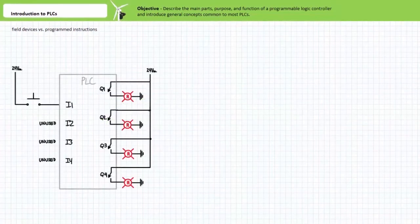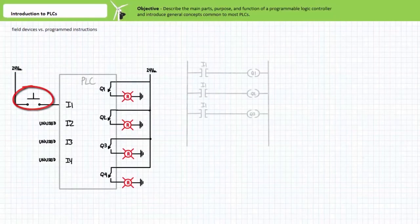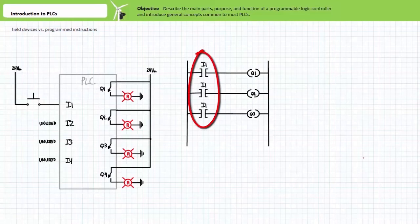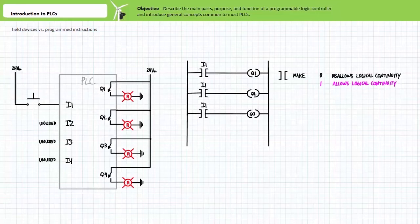A quick example of this important distinction between field devices and programmed instructions could be a single field switch that can be logically instantiated multiple times in a PLC program. Consider a 4-input, 4-output PLC with a normally open field input device on input 1. However, this is logically instantiated three times using a make instruction controlling three separate outputs. The make instruction disallows logical continuity anytime the field input device sends a logical 0 to input 1 and allows logical continuity anytime the field input device sends a logical 1 to input 1.